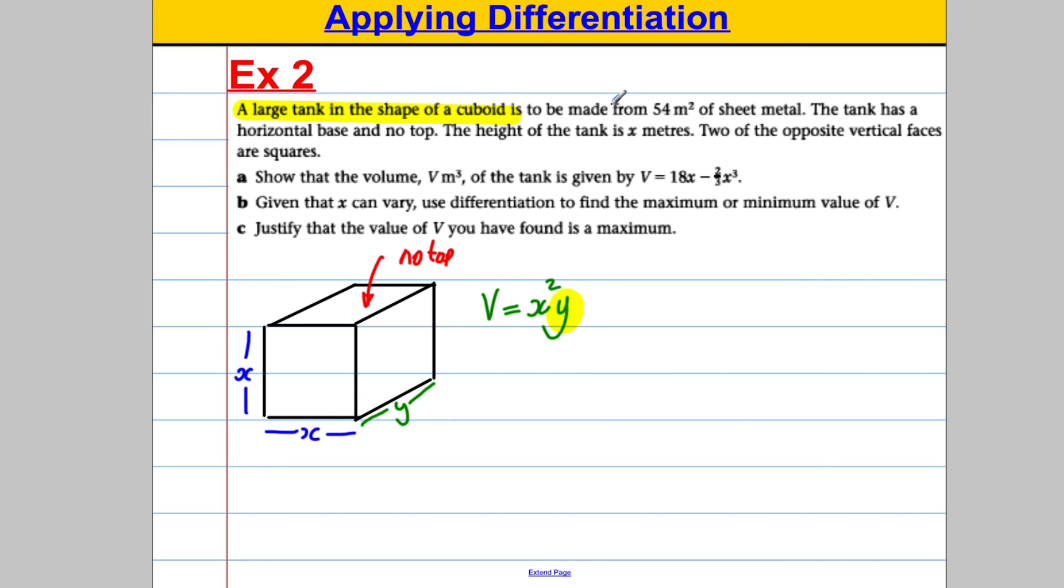But we're also told something about the area. The area is going to be 54 metres squared. So let's work out the area of this thing and think about what we've got in this shape. We're going to have a front face and hopefully you can see a back face there. So that area there, we're going to have an x squared on front and an x squared on the back. We're going to have 2x squared. Now, we're going to have this side and the equivalent of that on this side here, which will be x times y. So we're going to have plus 2xy.